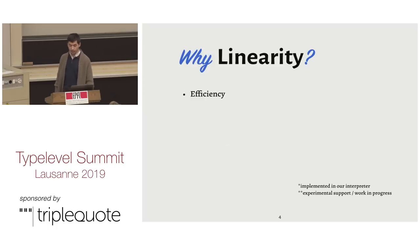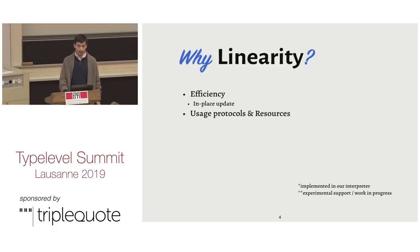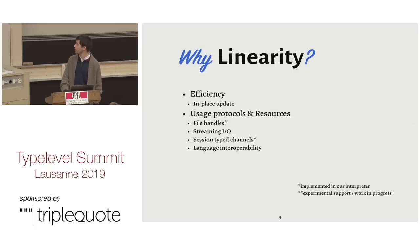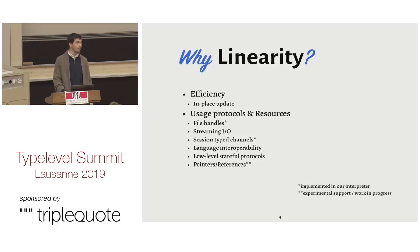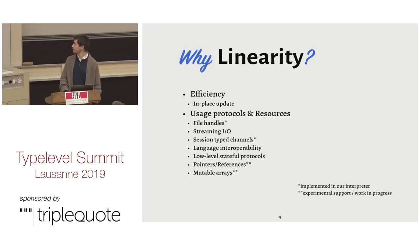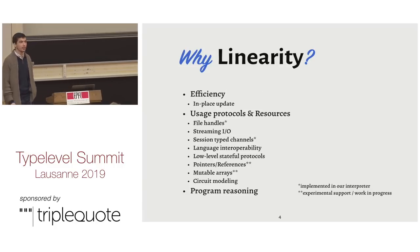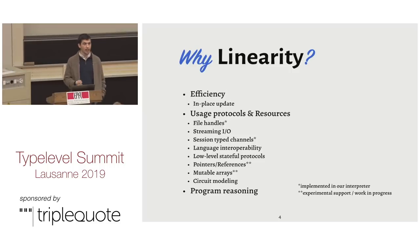So why do we want linearity? We know about efficiency — things like in-place update. There's usage protocols, file handles, which we've got implemented. Streaming I/O, session type channels, which are also implemented. I'm currently playing around with having a safe interface to pointers or references, and mutable arrays. There's also an aspect which I haven't heard many people talk about, which is program reasoning — reasoning about pure code.